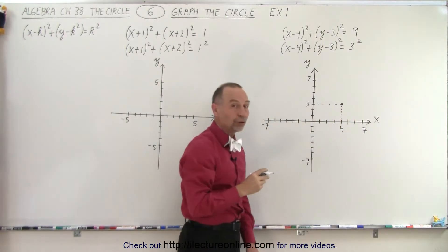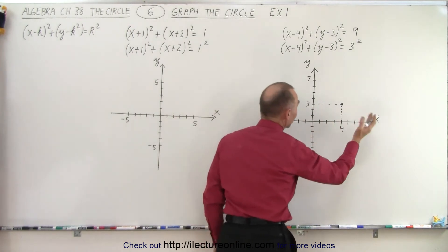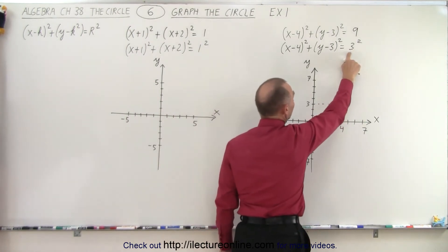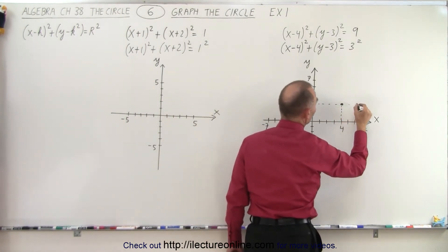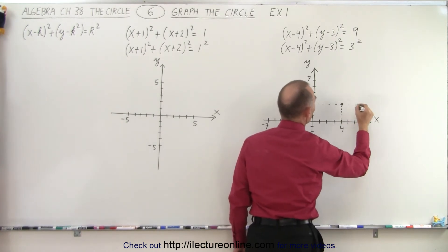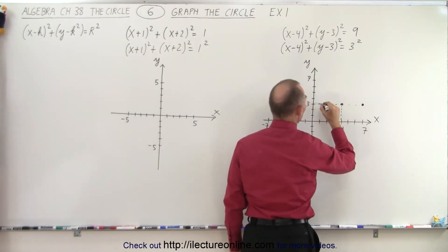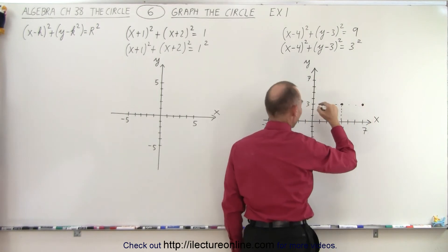And now from the center you're going to move a distance to the right, to the left, up or down equal to the radius. So we move 1, 2, 3 spots to the left. We move 1, 2, 3 spots to the right, to the left.